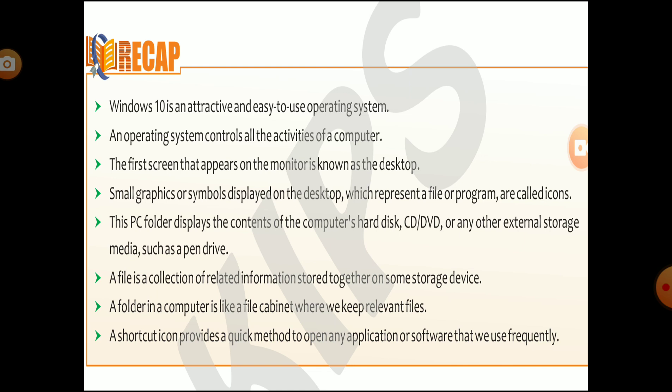This PC folder displays the contents of the computer's hard disk, including CD, DVD, or any external storage media such as a pen drive. A file is a collection of related information stored together on a storage device. A folder in a computer is like a file cabinet where we keep relevant files. A shortcut icon provides a quick method to open any application or software that we use frequently.